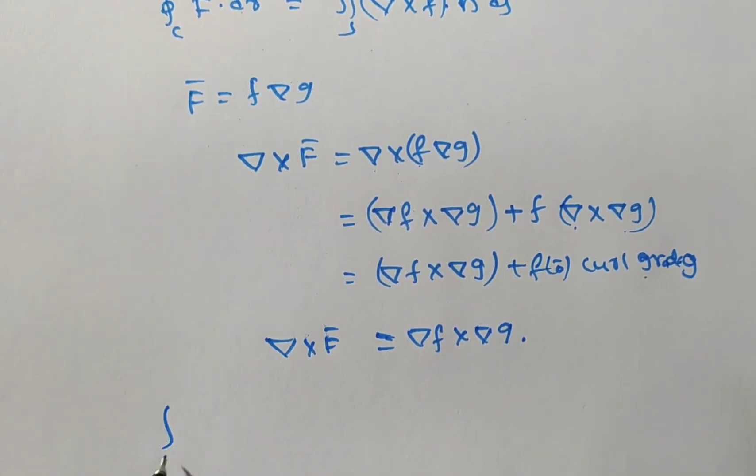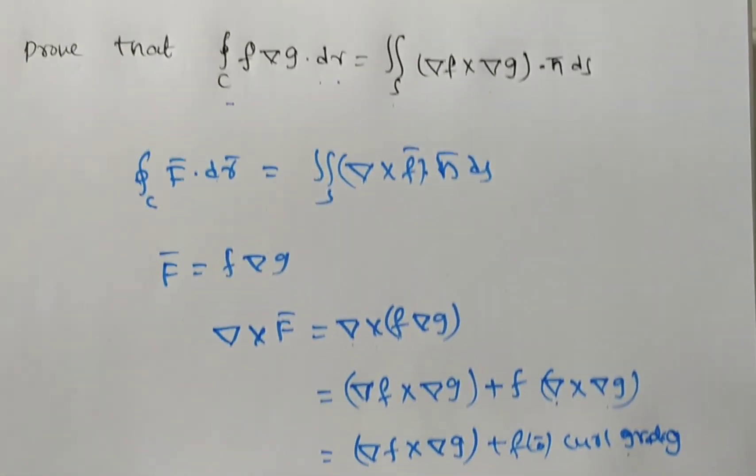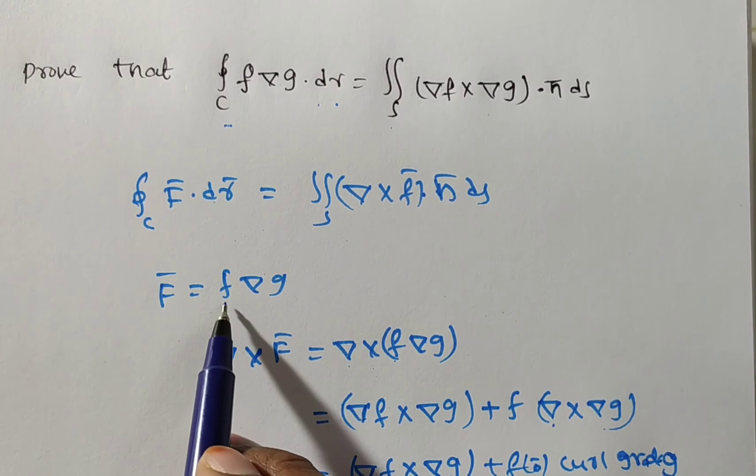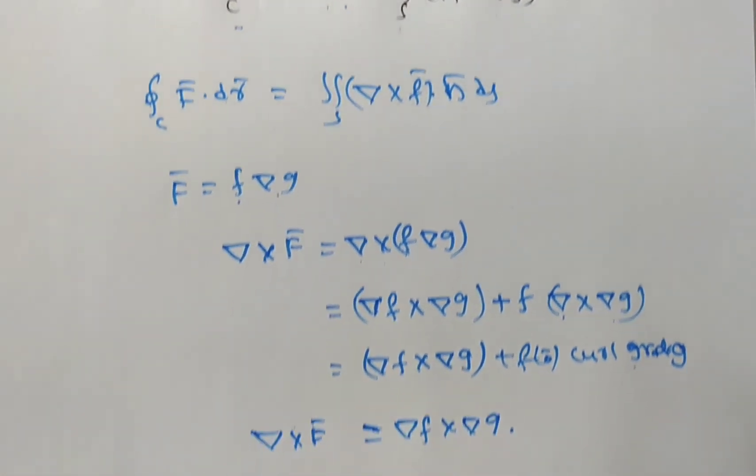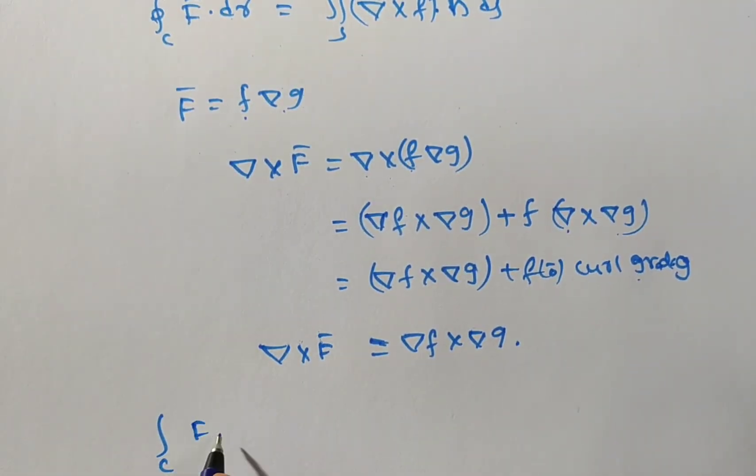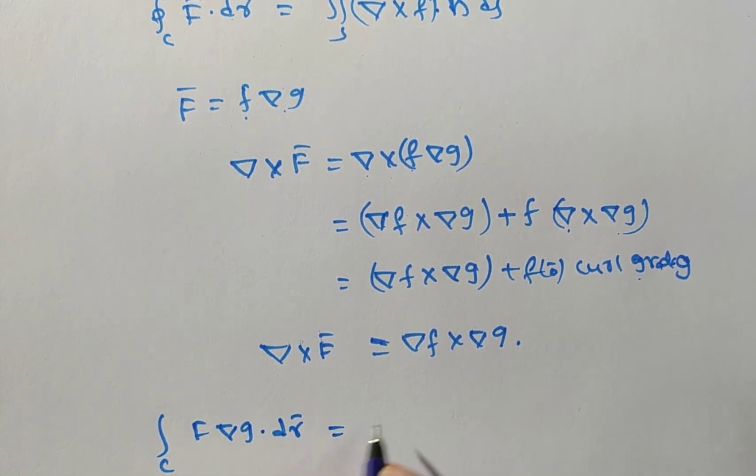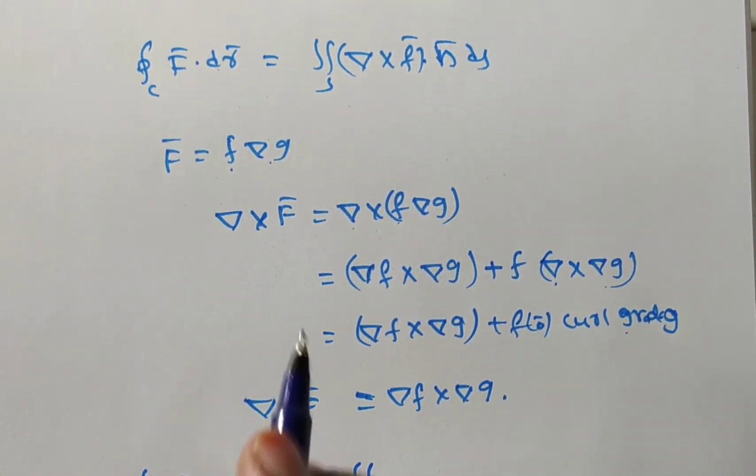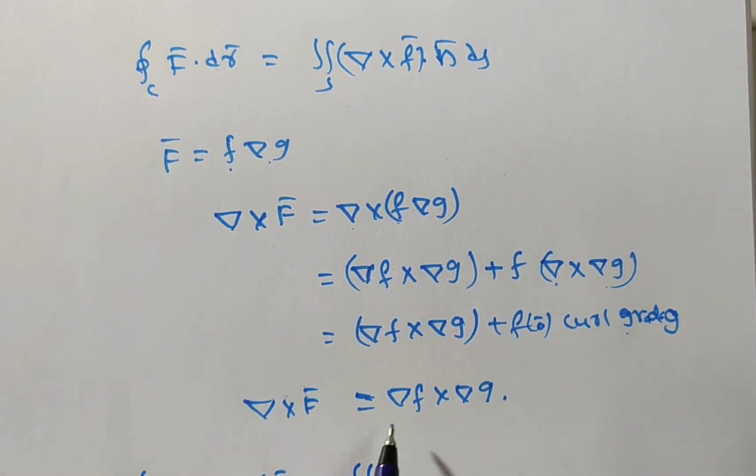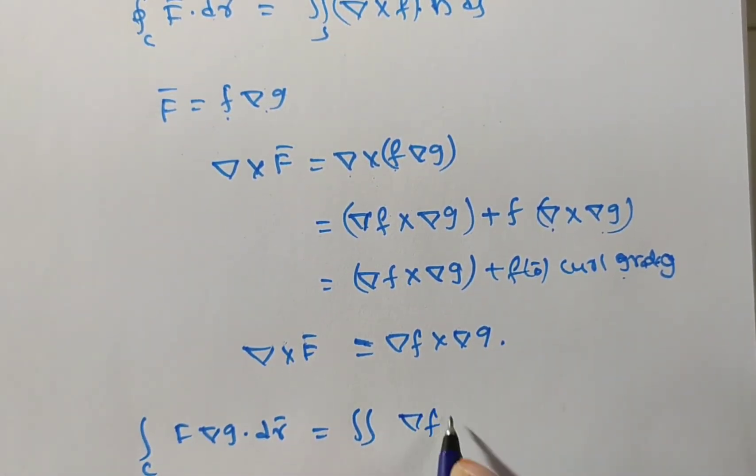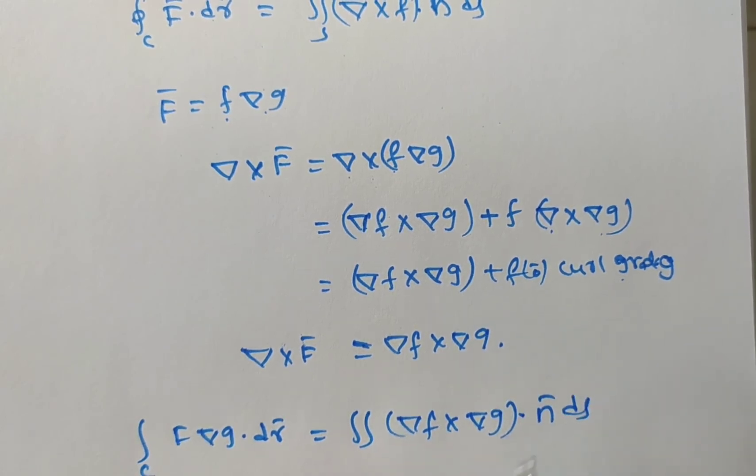So from this what you can say, integral over c f bar dr bar, what is f bar? f del g dot dr bar. f del g dot dr bar is equal to double integral over s del cross f bar. What is the del cross f bar? Del f cross del g. Del f cross del g dot n bar ds.